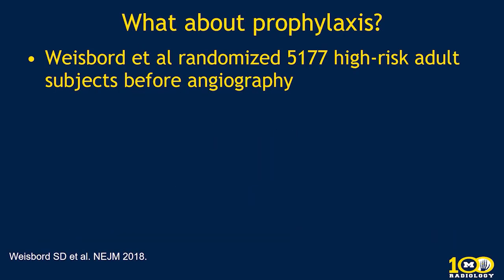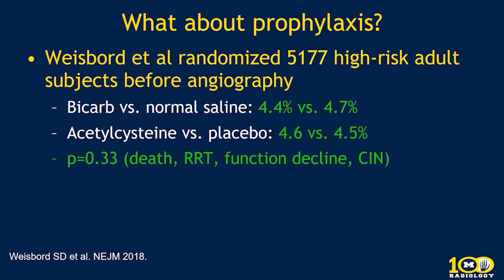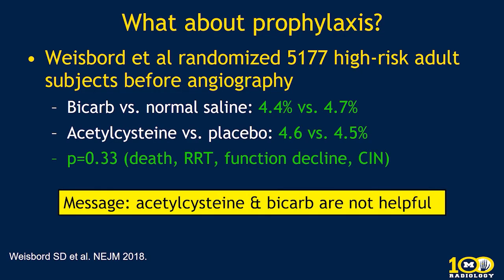What about prophylaxis? A randomized study published in the New England Journal of Medicine in 2018 randomized 5,000 high-risk adult subjects to prophylactic measures before angiography. They found that bicarbonate was no different than saline, and acetylcysteine was no different than placebo — for death, renal replacement therapy, renal function decline, and post-contrast acute kidney injury. The message: acetylcysteine and bicarb are not helpful before these studies.